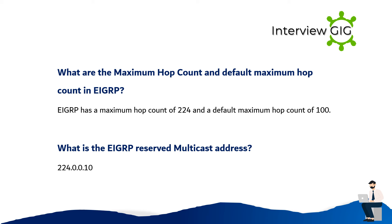What is the EIGRP reserved multicast address? The EIGRP reserved multicast address is 224.0.0.10.